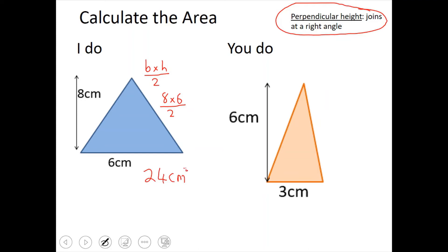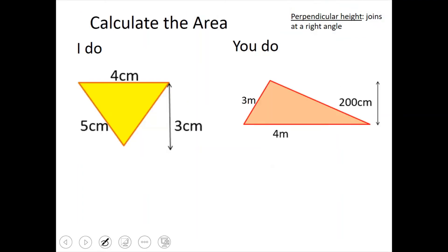I want you to pause the video and work out the area of this shape for me please. What you should have got is base times height divided by 2: 6 times 3 divided by 2, and you should have got 9 centimeters squared.